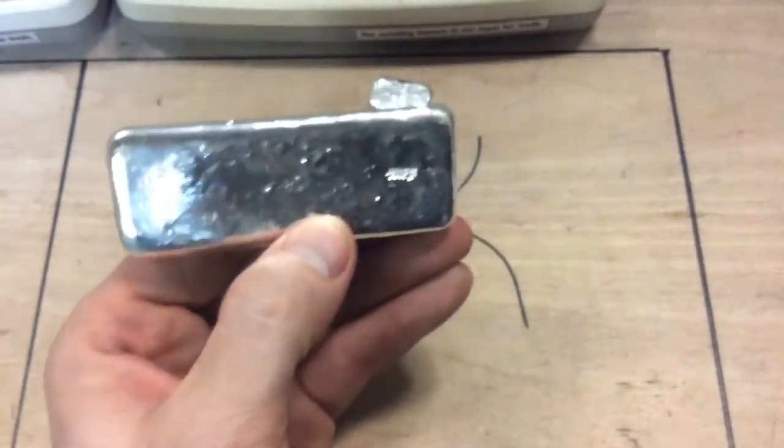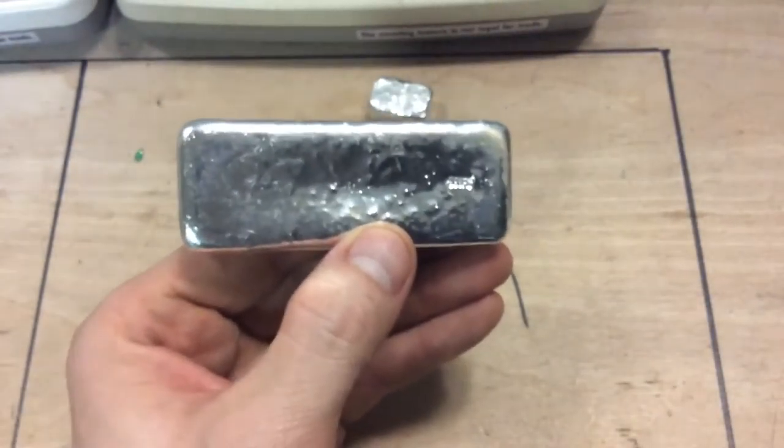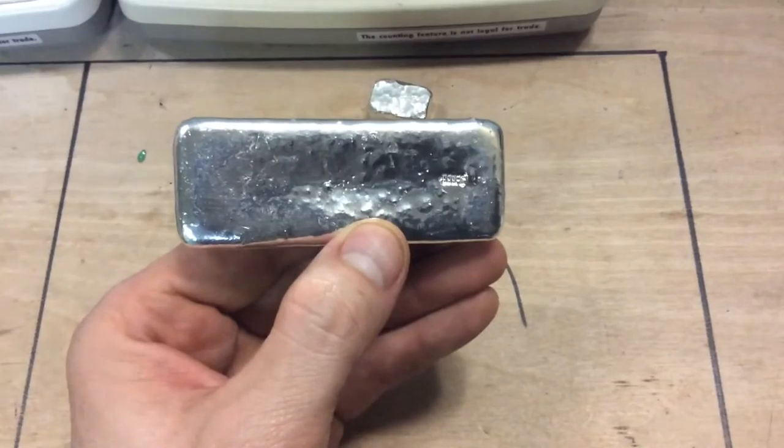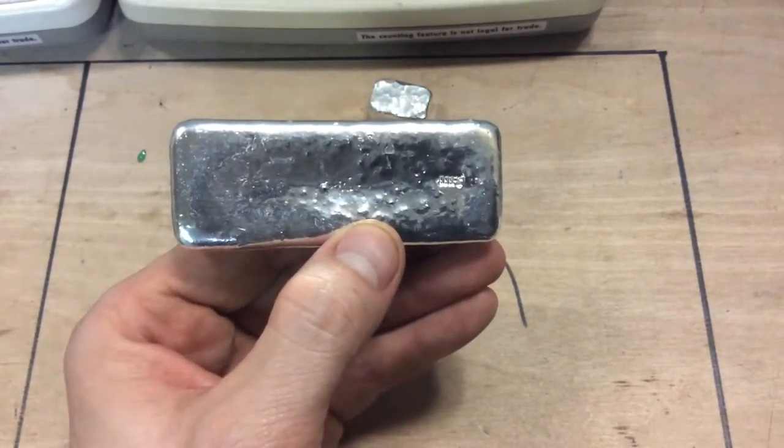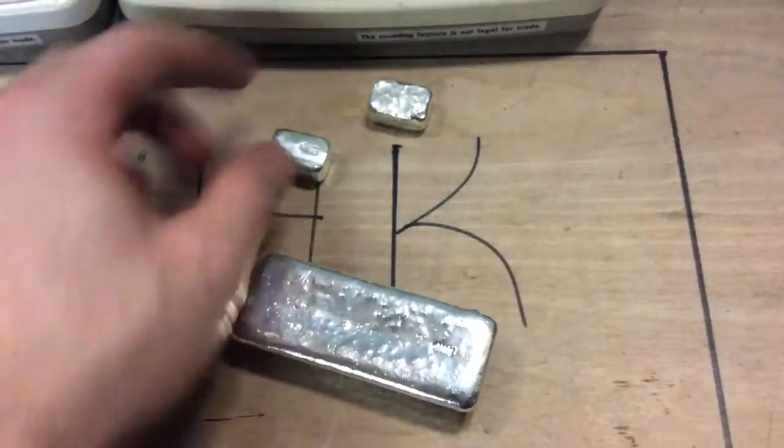And here's going to be the 10-ounce bar. This is technically called a Kit Kat bar. I don't know if I like it as much as the loaf. I do have a 10-ounce loaf mold which is the same shape as these, versus the rectangular Kit Kat.